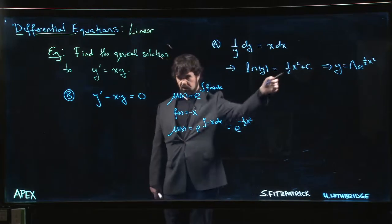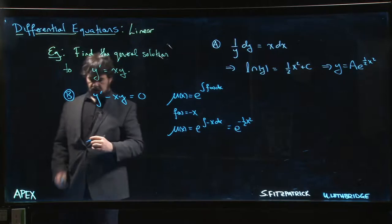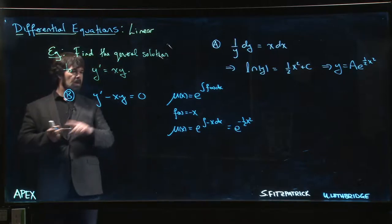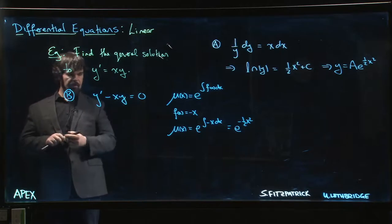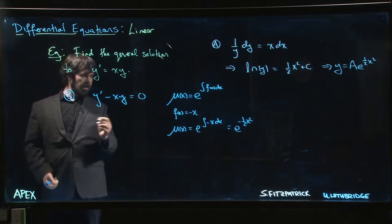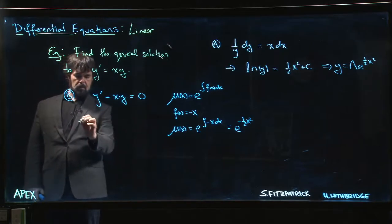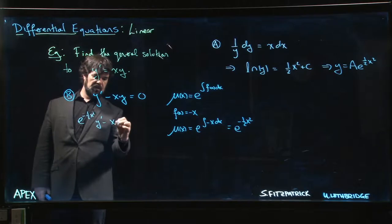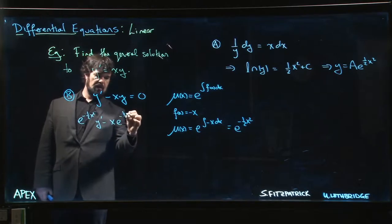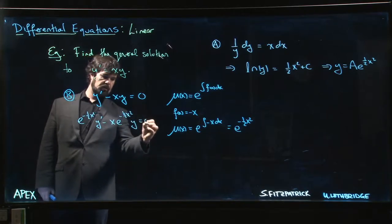So we multiply both sides of the equation by our integrating factor. Of course, we have 0 on the other side, so we don't have to worry about that. We get e to the minus 1 half x squared y prime minus x e to the minus 1 half x squared y is equal to 0.